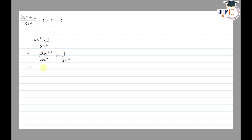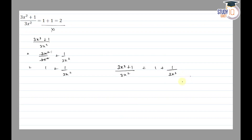This gives us 1 + 1/3x². If someone claims 1 + 1 = 2, that statement is wrong. The correct statement is: (3x² + 1) / 3x² = 1 + 1/3x². Thank you.